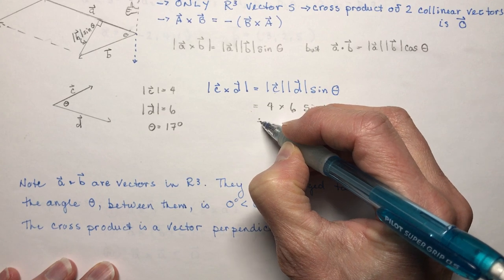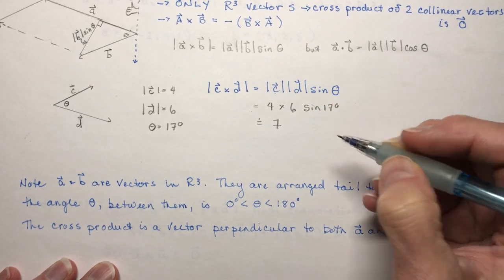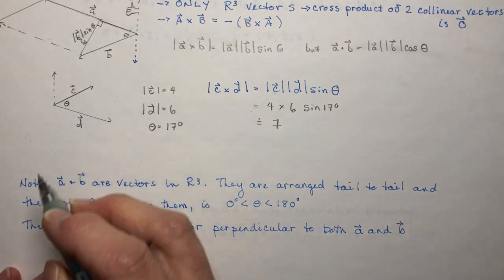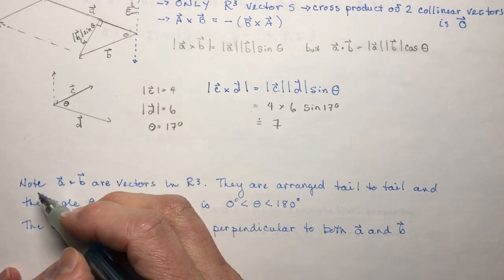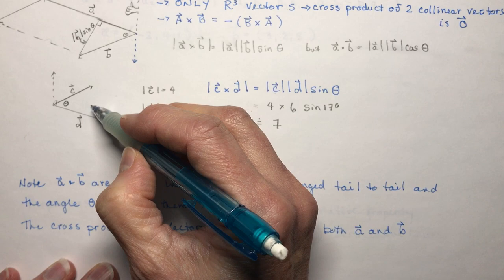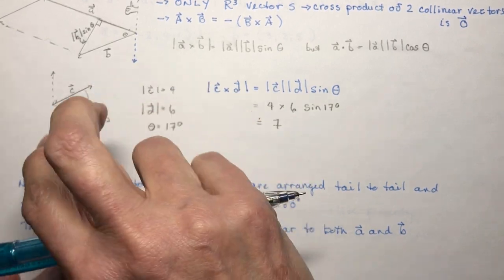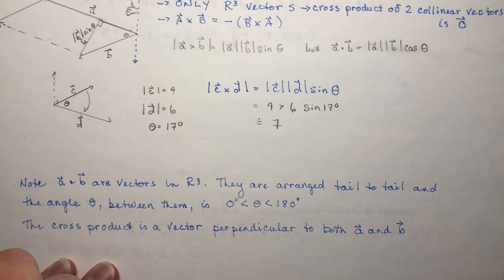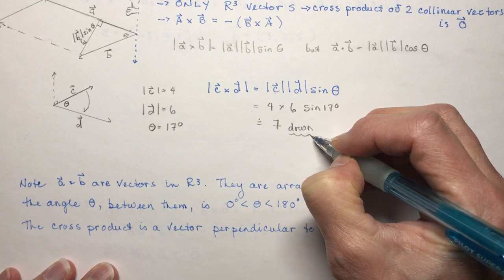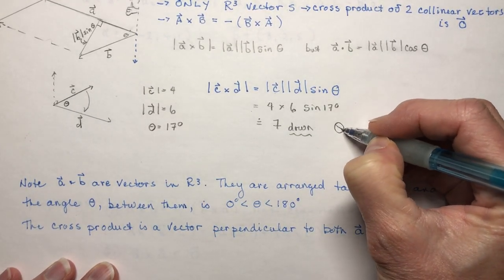And that comes out to approximately seven now you have to say up or down is your normal coming up out of the plane or is it going down. So if I did c on d I would be turning this way which would be clockwise or tightening so that means the screw is going down or into the page depends on what your teacher likes to say or maybe you had to draw a little diagram like this.